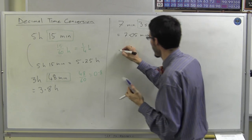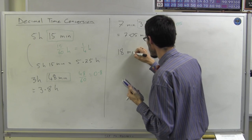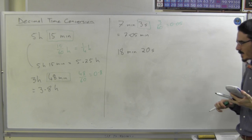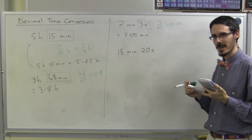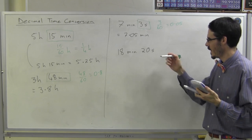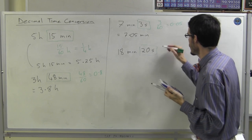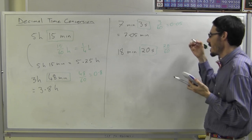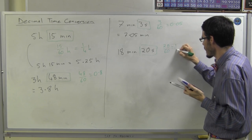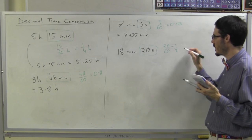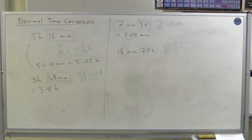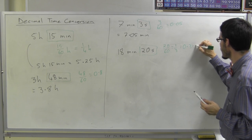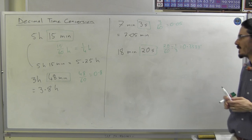Two more. 18 minutes, 20 seconds. This one, because sometimes you won't get a nice decimal. This is 20 out of 60. If you're thinking about fractions, that's one-third. If you get your calculator to work it out, your calculator is going to tell you 0.3333, and it's going to keep going forever.